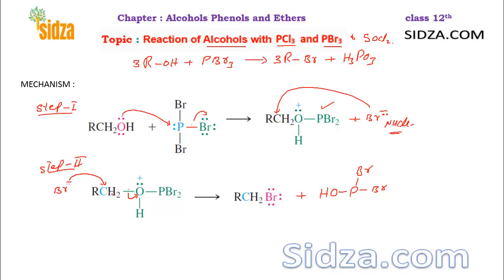As mentioned previously, the hydroxide group on its own is a bad leaving group, so it's not easy to replace OH directly. That's why you convert it into O-PBr2, which is a better leaving group. Because oxygen now has a positive charge on it, you can break that bond easily, and Br⁻ can replace the whole system in step two to give the alkyl halide.